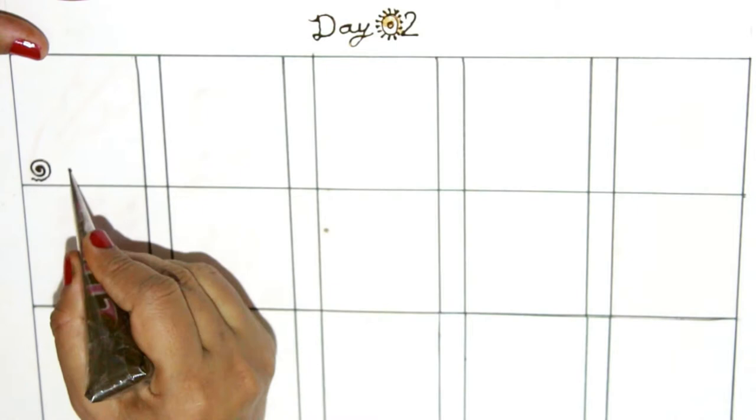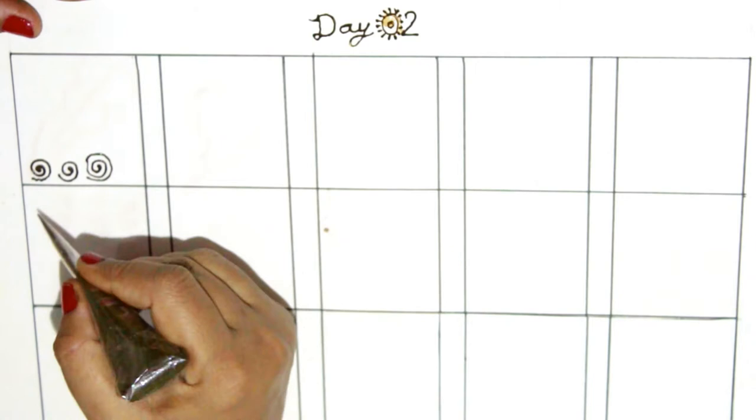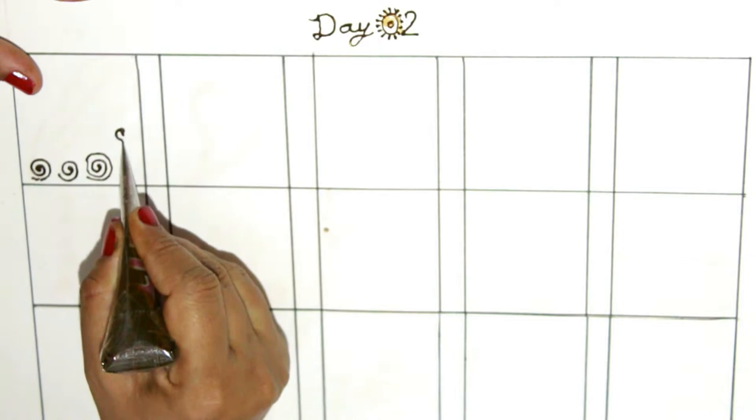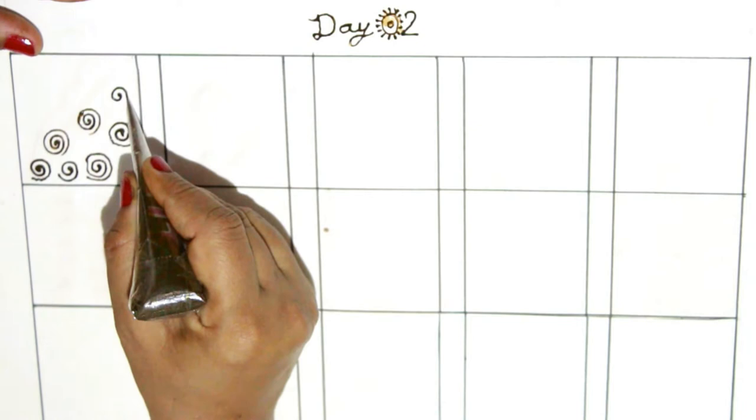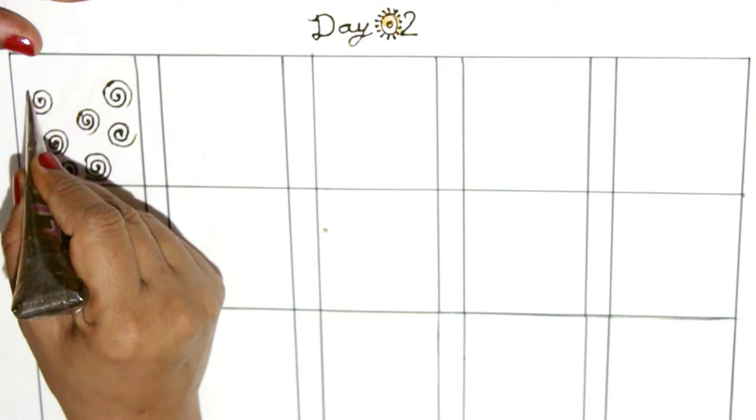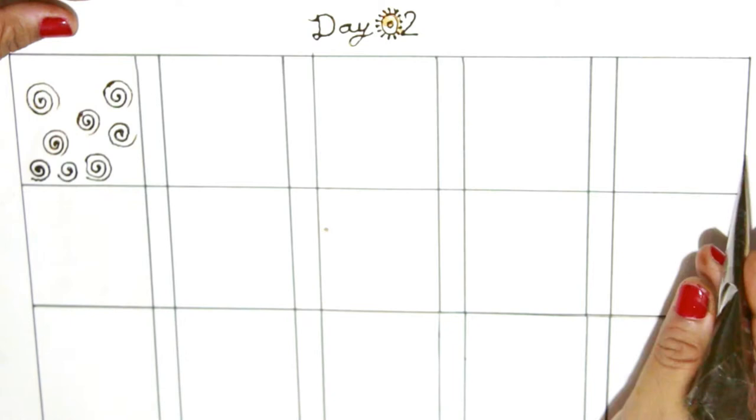Spirals are very easy to make and since we have practiced how to make circles already, this will make spirals more easier for us. We will make spirals both anti-clockwise and clockwise. Please practice this at least 4-5 times so that you can get perfection in your work.